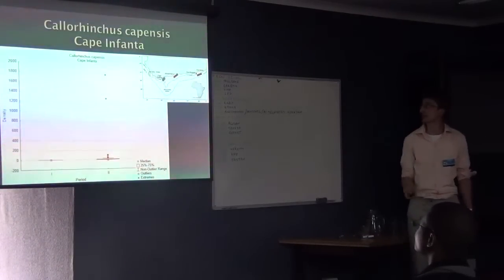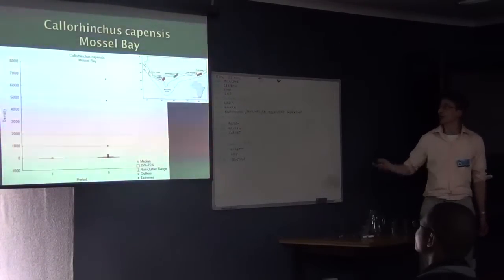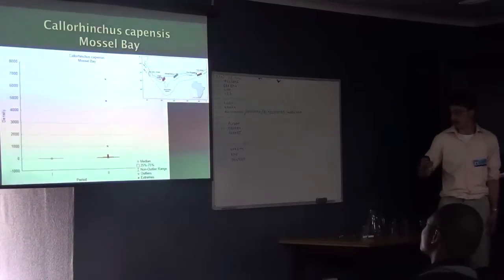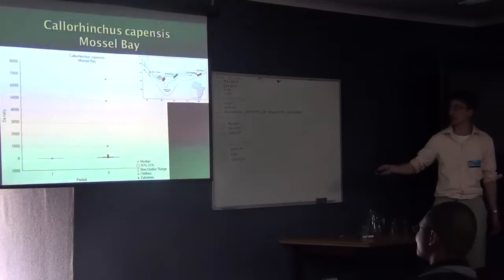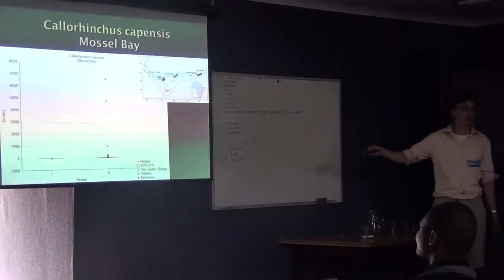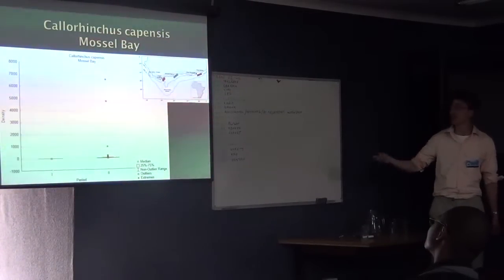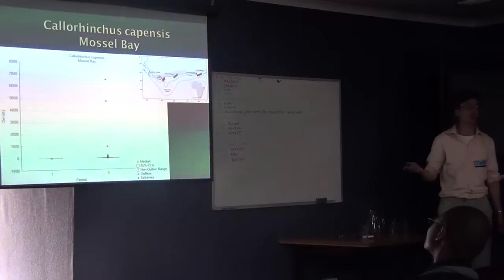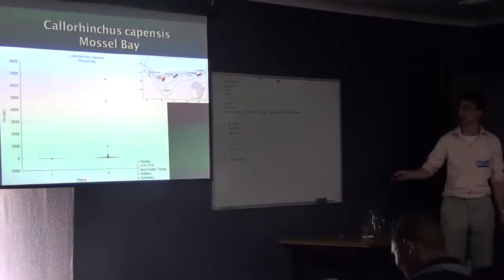And then the opposite for Callorhinchus capensis. Again, the Cape Infanta ground: actually zero catches, and really quite abundant in the recent surveys. And then again, same thing here: zero catches and an increase in the contemporary surveys. Now, I know this looks like a gear selectivity problem. But Callorhinchus capensis was caught in other stations, which I didn't include in this analysis, due to having no representative sample. So the gear could capture them, and they were correctly identified. What this means is that this is actually a low presence in the area analyzed.